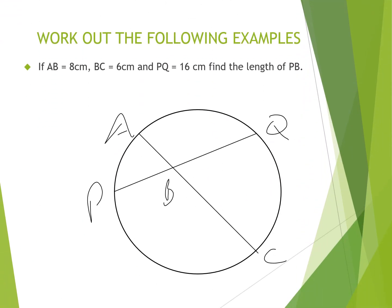I would like you to look at these examples and work them out on your own before continuing with the video. Pause the clip: if AB is 8 cm and BC is 6 cm, and PQ is given as 16 cm, find the length of PB. Use the formula — from one point on the circumference to the point of intersection, multiplied by point of intersection to the other point on the circumference — and compare your answer as the clip continues.